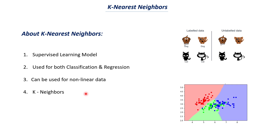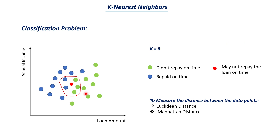I'll give the link for the intuition video in the description. In that video we took an example for a classification problem where we used loan amount on the x-axis and annual income on the y-axis. We basically tried to find whether a person is going to repay the loan on time or not, and we plotted data points with loan amount as x-axis and annual income on the y-axis.